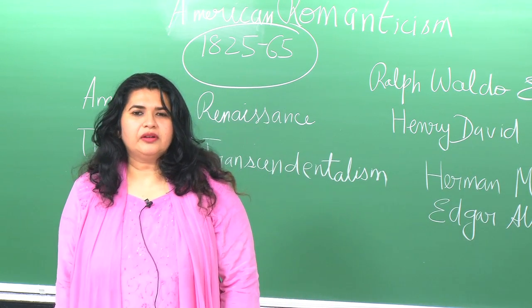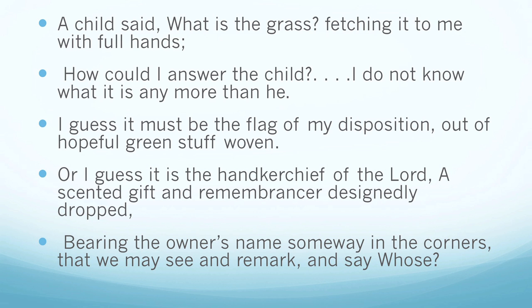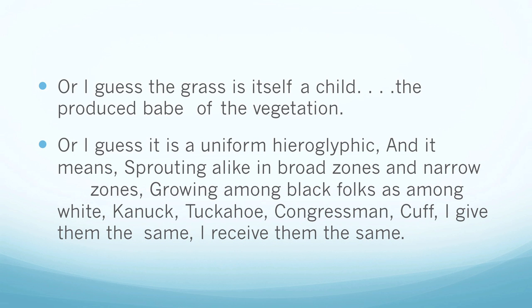Let me read out a couple of lines from Walt Whitman: 'A child said, what is the grass, fetching it to me with full hands? How could I answer the child? I do not know what it is any more than he. I guess it must be the flag of my disposition out of hopeful green stuff woven. Or I guess it is the handkerchief of the Lord, a scented gift and remembrance designedly dropped, bearing the owner's name some way in the corners that we may seek and remark and say whose. Or I guess the grass is itself a child, the produced babe of the vegetation. Or I guess it is a uniform hieroglyphic and it means a sprouting alike in broad zones and narrow zones, growing among black folks as among white — Canuck, Tuckahoe, Congressman, Cuff — I give them the same, I receive them the same.'